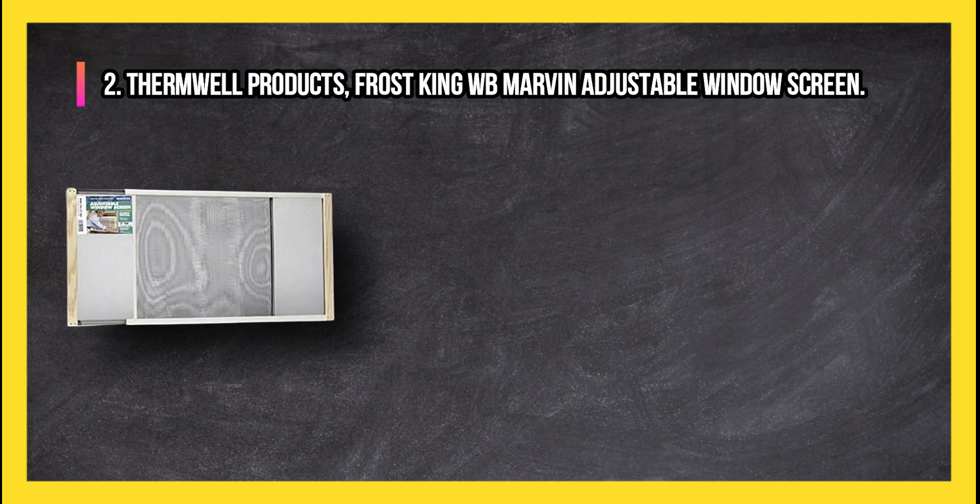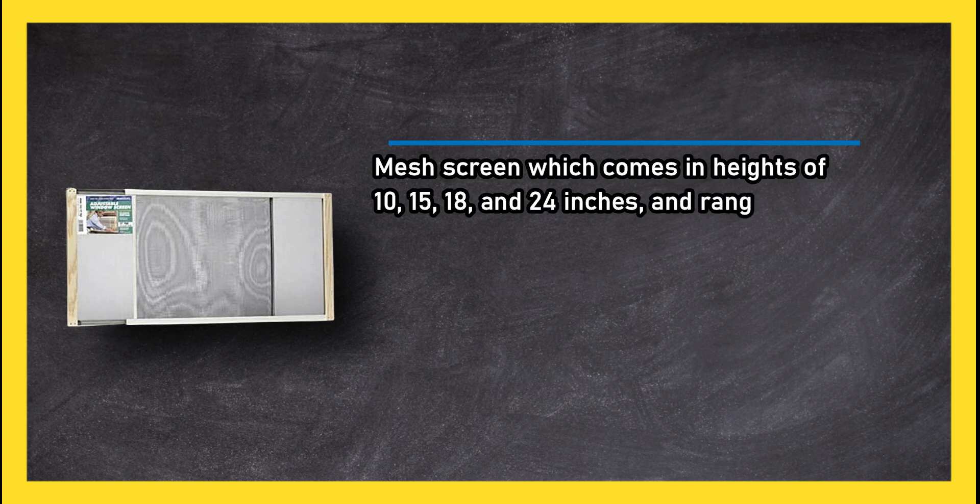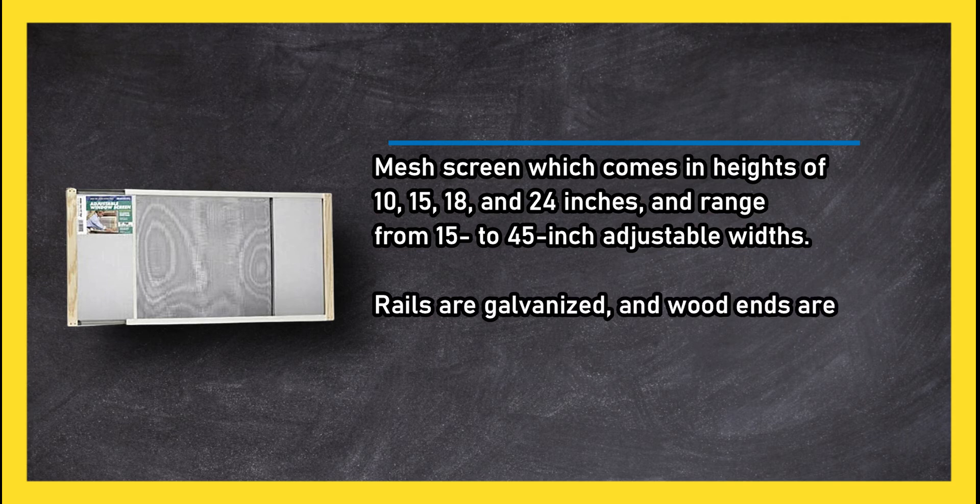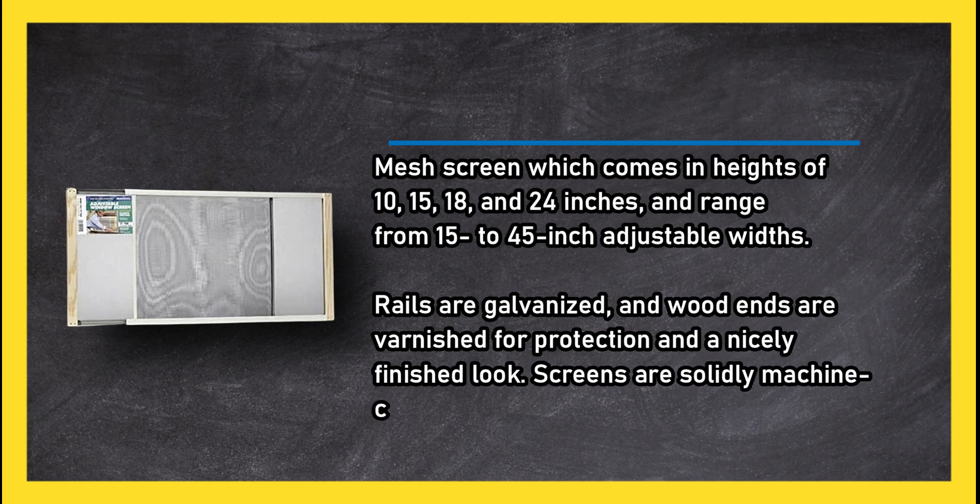At number two, Thermwell Products Frost King WB Marvin Adjustable Window Screen. Mesh screen which comes in heights of 10, 15, 18, and 24 inches, and range from 15 to 45 inch adjustable widths. Rails are galvanized, and wood ends are varnished for protection and a nicely finished look.